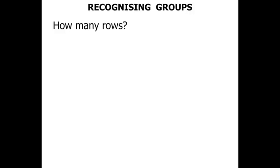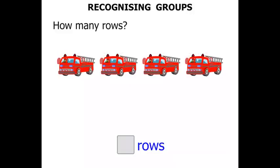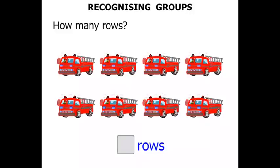How many rows? We'll write our answer down here. One row of fire engines. Two rows of fire engines. We've got two rows.